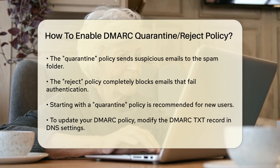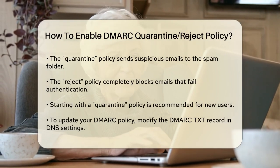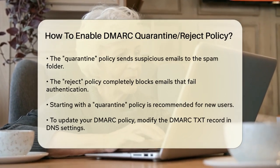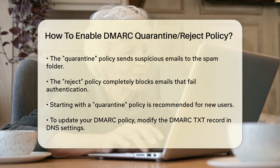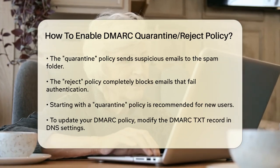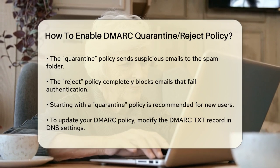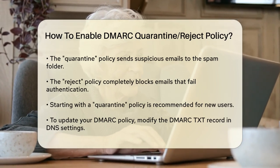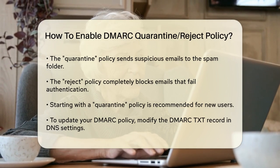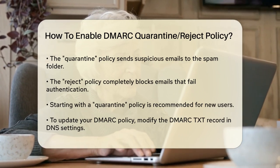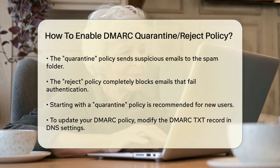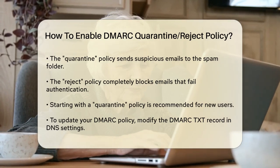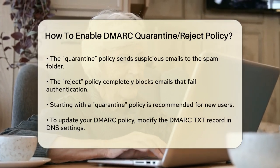The none policy just logs the emails but doesn't take any action. The quarantine policy tells receiving servers to treat suspicious emails with extra caution, often by sending them to the spam folder. The reject policy is the strictest, telling servers to reject emails that fail authentication entirely. If you're just starting out, it's a good idea to start with quarantine to ensure that legitimate emails aren't accidentally blocked. Once you're confident that everything is working correctly, you can switch to reject.